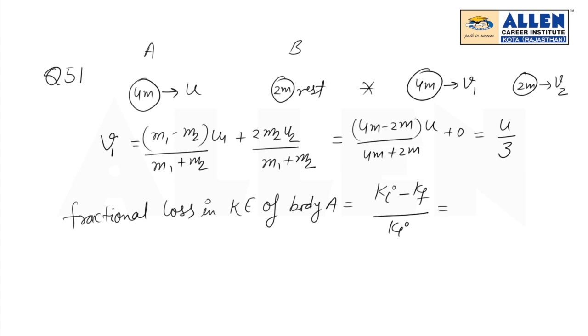On solving it, I get half 4m U squared minus half 4m U by 3 whole squared upon half 4m U squared. On solving, I get 1 minus 1 upon 9 which equals 8 by 9. So my answer is 8 by 9.